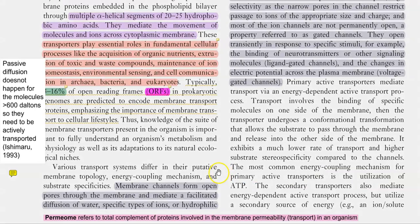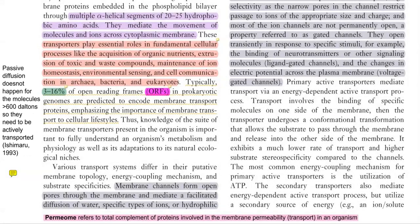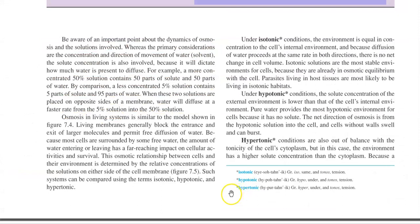This kind of passive diffusion does not happen when the molecule size is more than 600 Daltons. Molecules larger than 600 Daltons need to be transported using other mechanisms. The osmotic relationship between cells and their environment is usually determined by the relative concentration of the solution on either side of the cell membrane, and such systems are commonly compared using terms such as isotonic, hypertonic, and hypotonic.